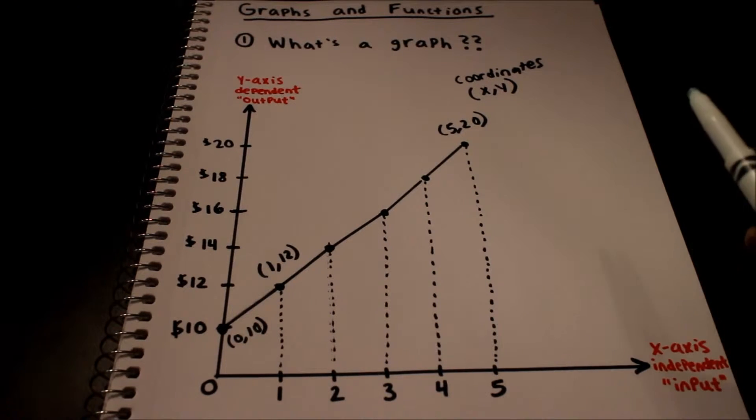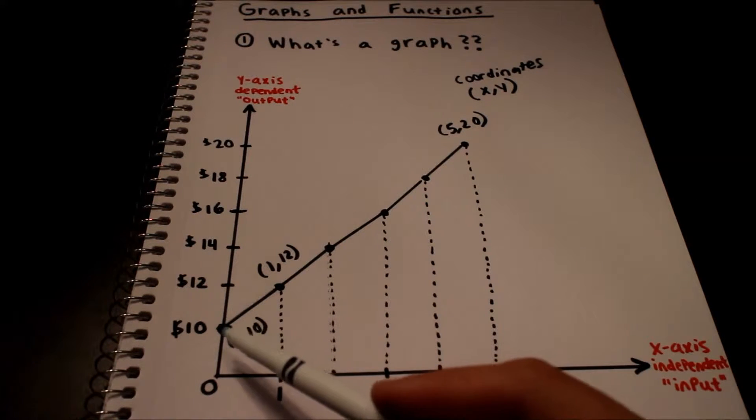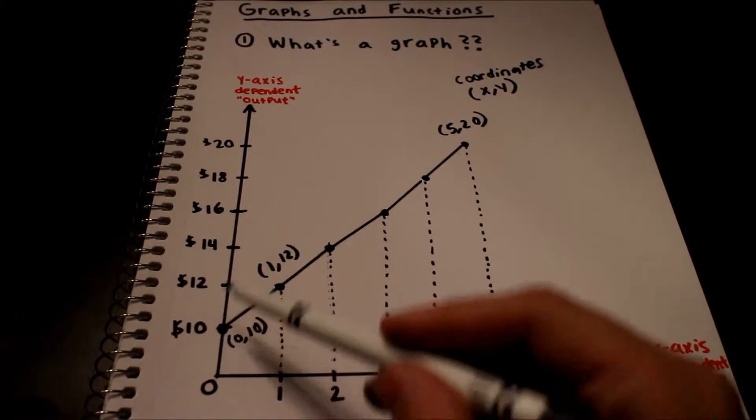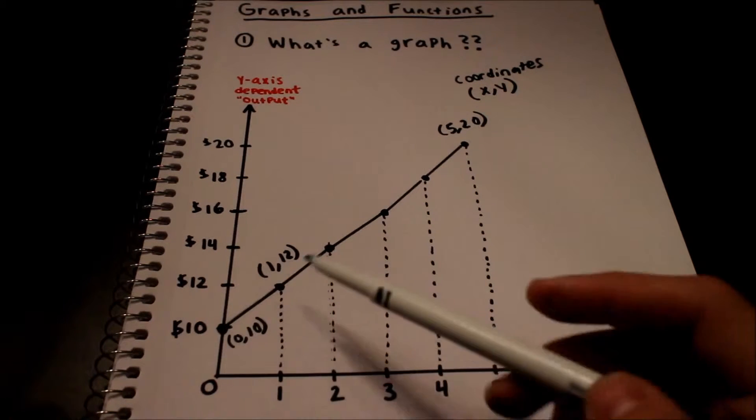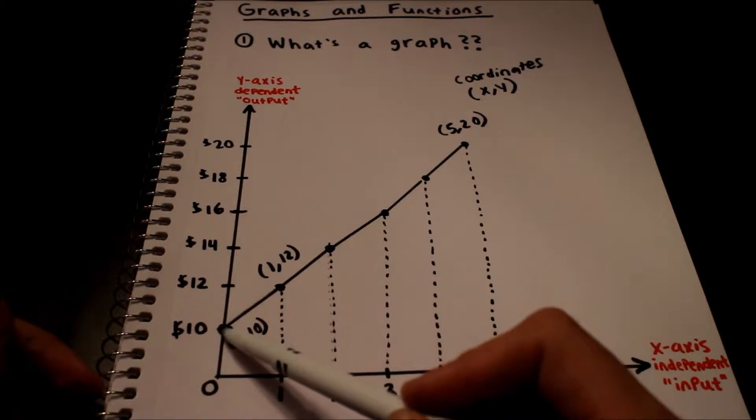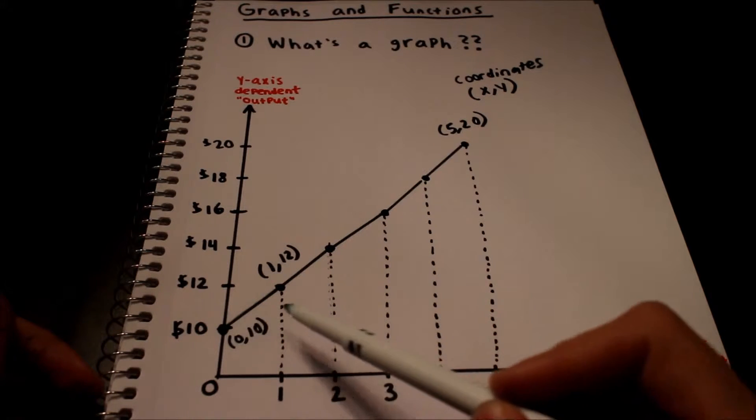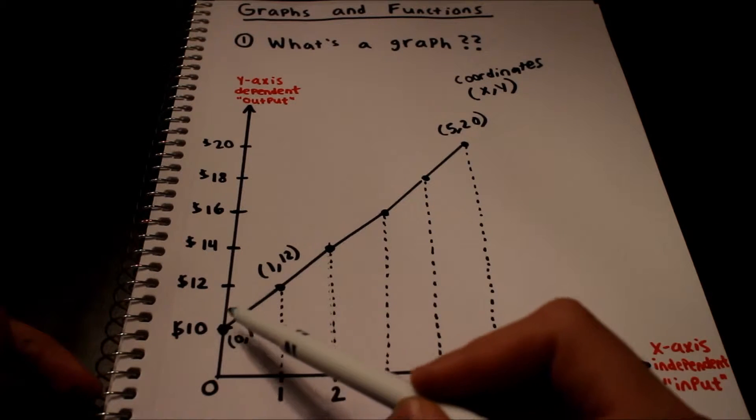You also have these terms called intercepts. This right here is the Y intercept. Any intercept is basically the point on the axis that you're talking about where it crosses it. So you see how the graph, the line, it intersects this point right here. That's why they call this the Y intercept. It's the same place where X equals 0.